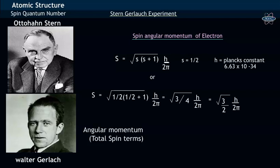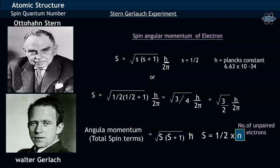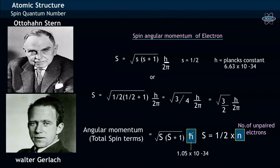In terms of total spin, the angular momentum is represented by square root of S times S plus 1, h bar. Here S equals to half of the number of unpaired electrons, while h bar is a constant with a value of 1.05 × 10⁻³⁴.